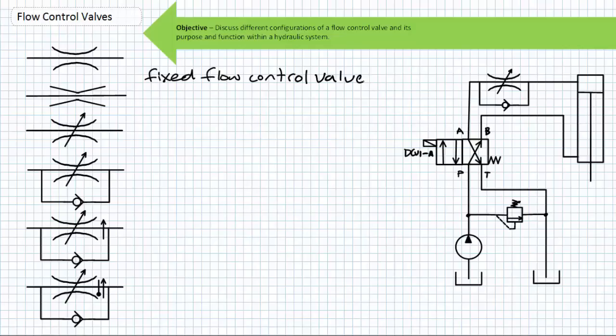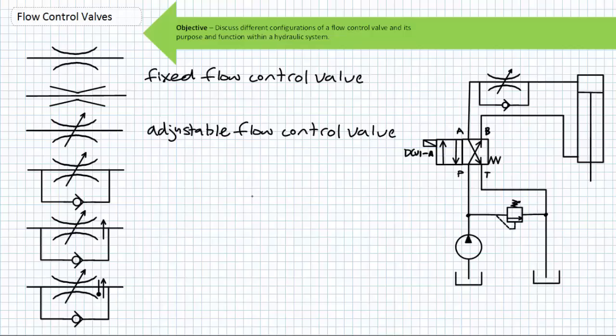The two symbols at the top are fixed flow control valves, meaning the size of the orifice cannot be varied. These are sometimes called venturis and are sometimes drawn with straight lines indicating a fixed restriction. If a flow control valve is adjustable or variable — meaning the size of the orifice can be changed — the schematic indicates so with a variable arrow on the valve. It does so by inserting or removing a portion of an adjustable needle into the path of oncoming fluid, hence the alternate name needle valve.